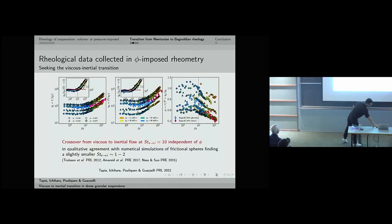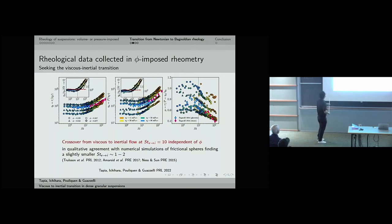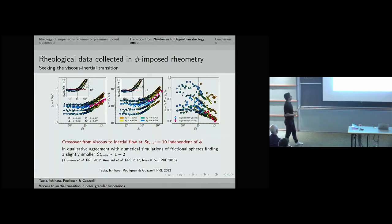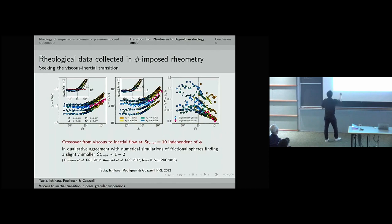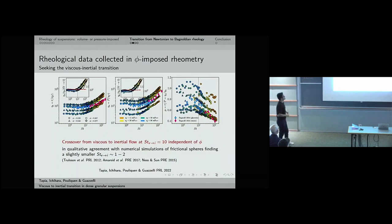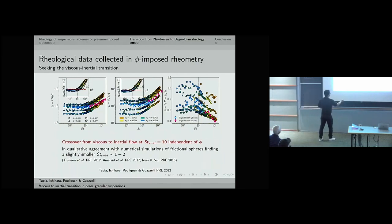To find the crossover from the Newtonian viscous regime to the Bagnoldian inertial regime more precisely, we rescale η_s and η_n by their viscosity values as the Stokes number goes to zero, and obtain a very nice collapse of the data. This collapse shows that the crossover from viscous to inertial regime occurs at a transitional Stokes number of ~10, which is independent of packing fraction – in qualitative agreement with numerical simulations of frictional spheres, which find a slightly smaller transitional Stokes number.